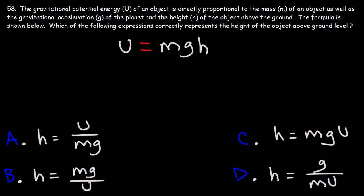The gravitational potential energy of an object is directly proportional to the mass of the object, the gravitational acceleration of the planet, and the height of the object above the ground. The formula is shown below. Which of the following expressions correctly represents the height of the object above ground level?